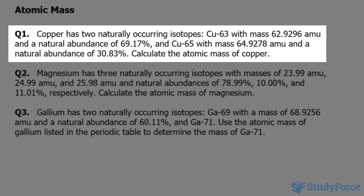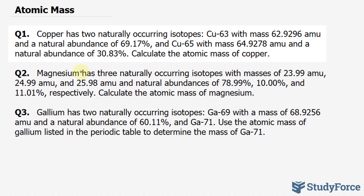Question one reads: copper has two naturally occurring isotopes. Cu-63, that has a mass of 62.9296 amu and a natural abundance of 69.17%. And another isotope, copper-65, with its mass and natural abundance shown. Calculate the atomic mass of copper.